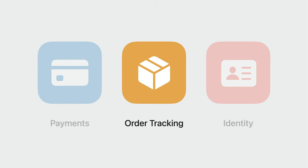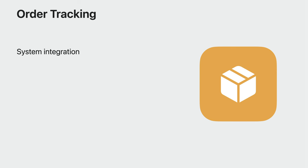And that's everything we have today regarding payments. Let's talk about order tracking. Order tracking was introduced in iOS 16 as a way for users to track orders placed with participating merchants. The response from users has been fantastic, and we've been hard at work making order tracking even better. We'll talk about how we've improved integration within the operating system, go through some enhancements we've made, and introduce new ways to add orders to Wallet.